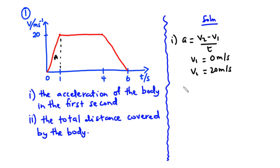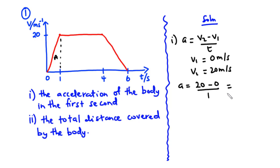So the acceleration is going to be 20 minus zero divided by time, that is one second. 20 minus zero divided by one is equal to 20, so we have acceleration equal to 20 meters per second squared.